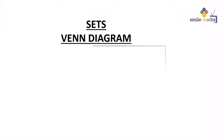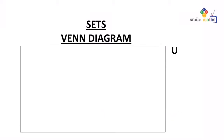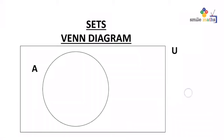Hi guys, welcome to this video. Still on the topic of sets, in another Venn diagram we have our circle set U, we have another circle set A, and another yellow circle we call set B.